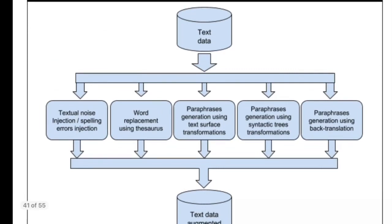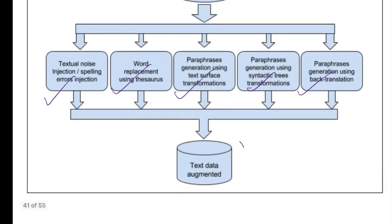The pre-processing pipeline for data augmentation takes textual data, applies textual noise injection or spelling error correction, word replacement using a thesaurus, and paraphrasing using all three methods discussed, and finally produces the augmented set.